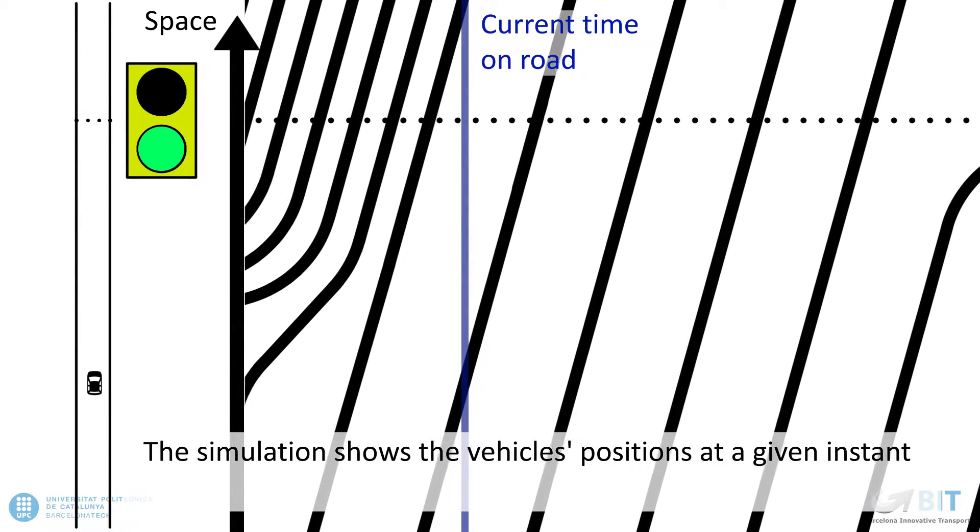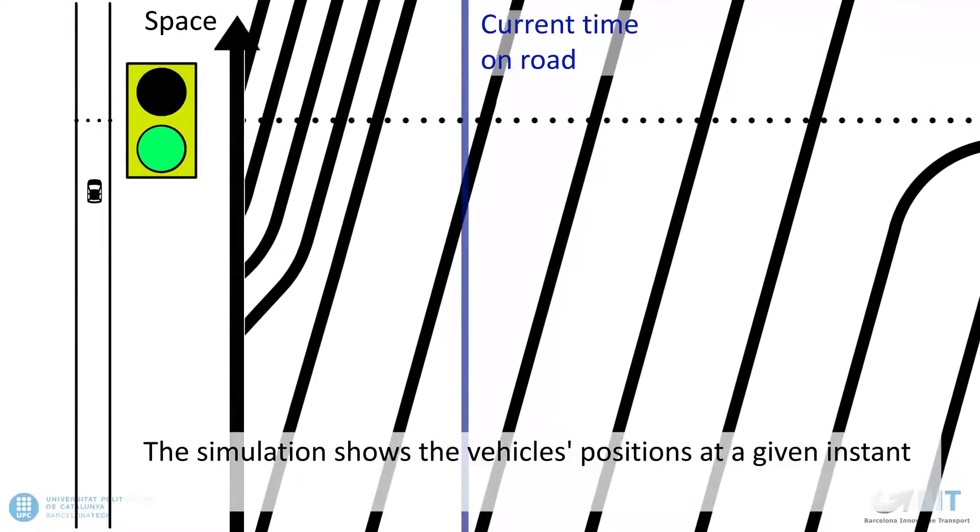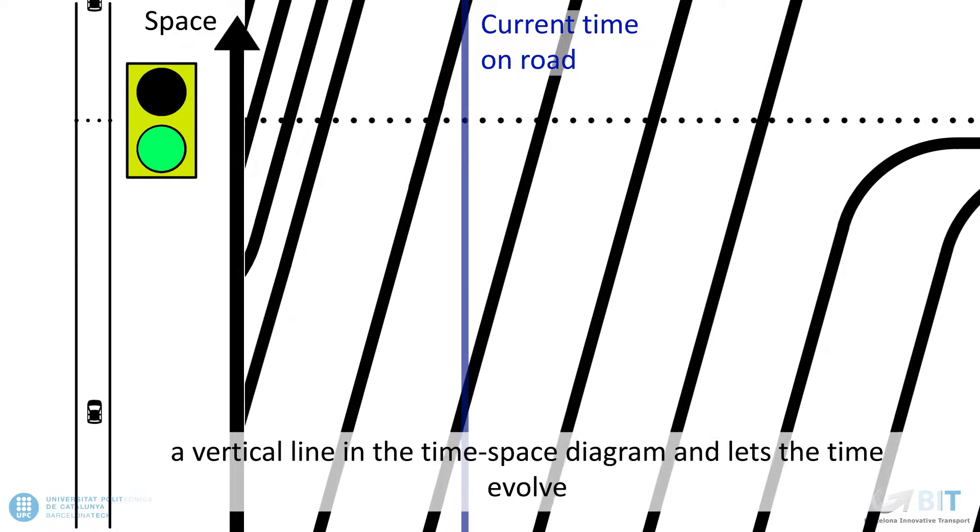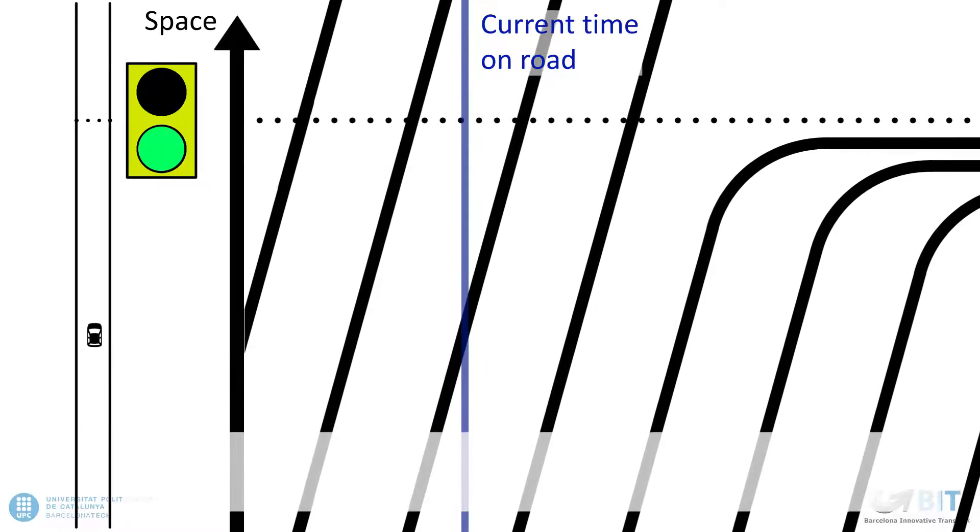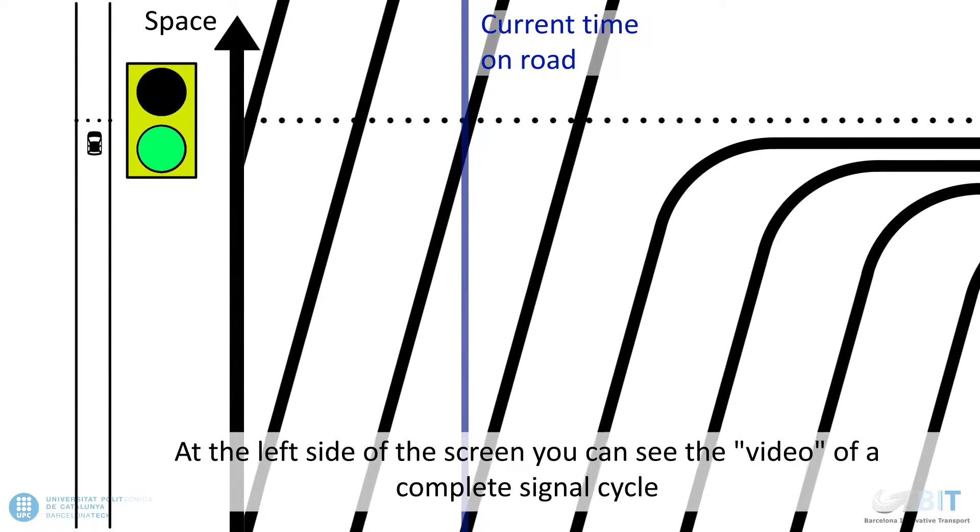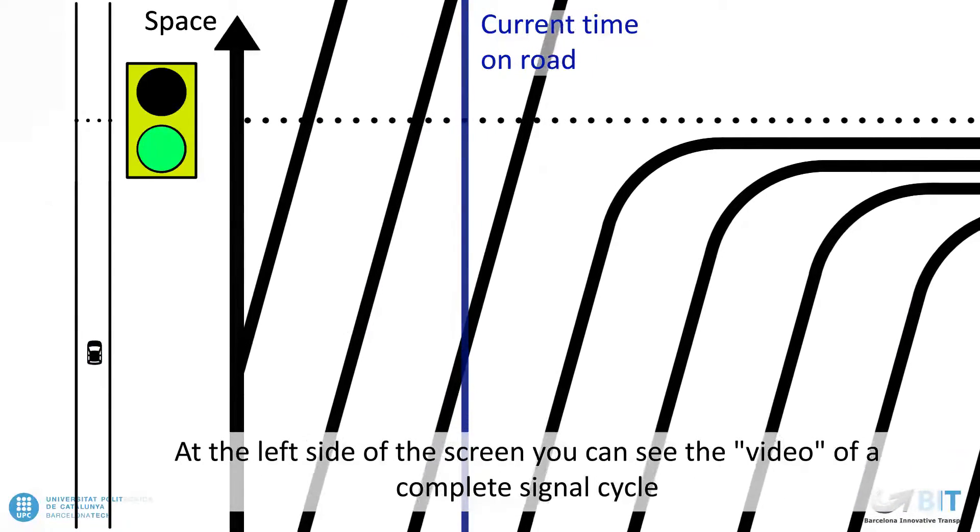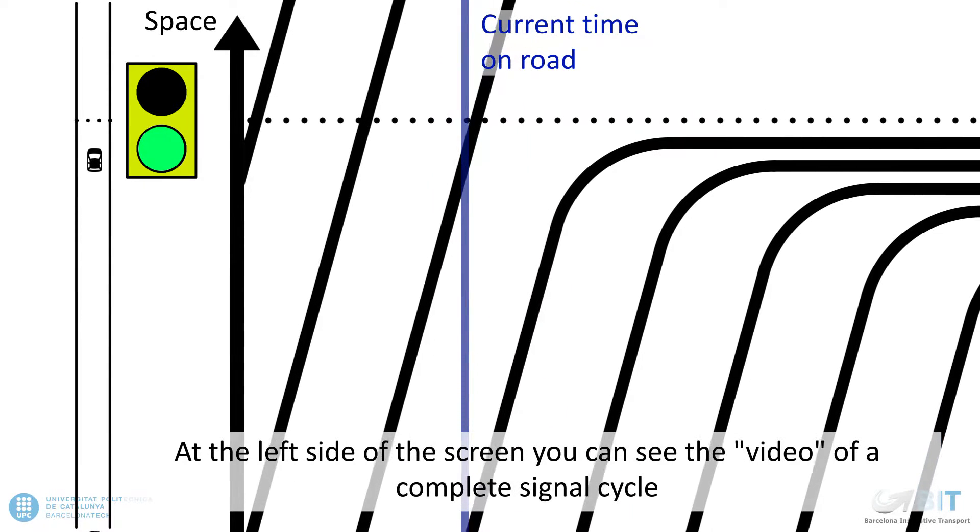The simulation shows the vehicle's positions at a given instant, a vertical line in the time-space diagram, and lets the time evolve. At the left side of the screen, you can see the video of a complete signal cycle.